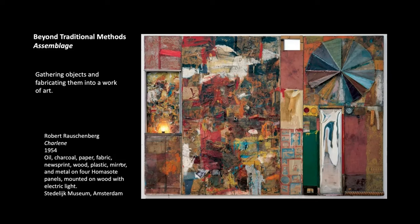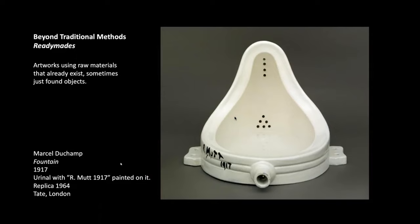Then we have ready-mades, which we'll focus more closely on later in this course. Briefly, these are artworks that use raw materials that already exist — sometimes literally an object you find that becomes the work in and of itself. A very famous example is Marcel Duchamp's Fountain from 1917, where he literally found a urinal, turned it on its side, and signed it 'R. Mutt 1917' — R. Mutt being one of his aliases. Ready-mades are very much about making us think: what is an art object to begin with? Marcel Duchamp did not make this urinal — he found it, manipulated it, and signed it, making us rethink what an art object is.